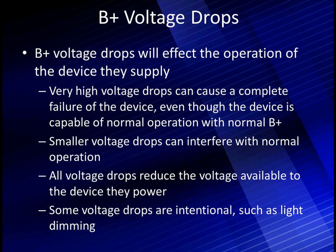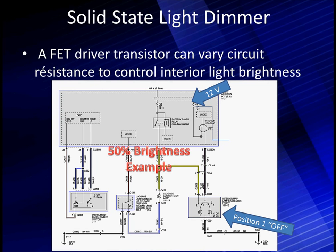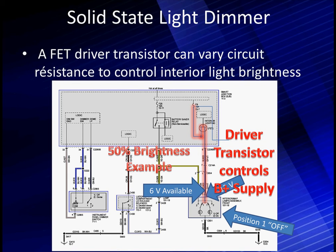Voltage drops are going to affect the operation of the device they supply. Very high voltage drops, either in hot B-plus or ground, can cause complete failure to the device, even though the device is capable of normal operation if B-plus and ground were normal. Smaller voltage drops can interfere with normal operation. All voltage drops reduce the voltage available to the device they power. Some voltage drops are intentional, such as light dimming. Here's a solid-state light dimmer — an FET driver transistor can vary the resistance of the control to control the interior light brightness. This is an example of 50% brightness: we're supplied with battery voltage, yet we only have 6 volts available at the actual device because we dropped the other voltage in the FET. It did not turn on fully — only 50%. This is an example of voltage drops. We see it every day.